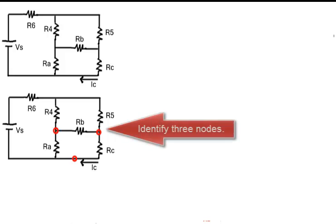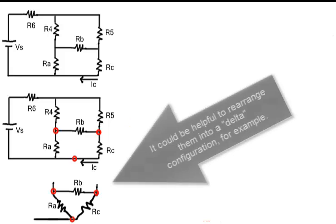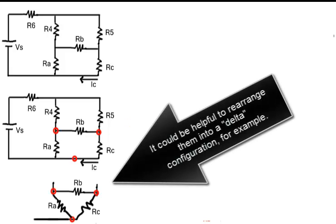We first identify three nodes connecting three resistors. It could be helpful to rearrange them into a Delta configuration, for example.